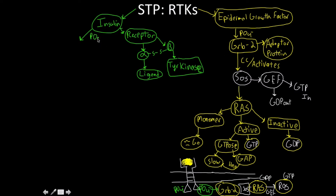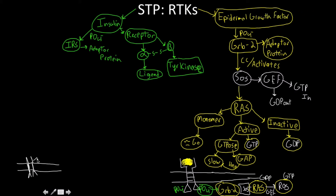Just as with the EGF receptor, we get phosphorylation of an adapter protein — in this case known as IRS, which stands for Insulin Receptor Substrate. Like GRB2, IRS is an adapter protein and not an enzyme; it mediates protein-protein interactions. Ligand binding causes conformational changes, dimerization, and cross-phosphorylation, and the activated tyrosine kinases then phosphorylate IRS multiple times.